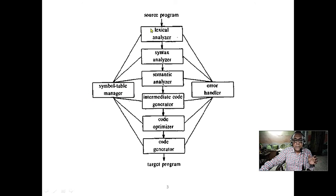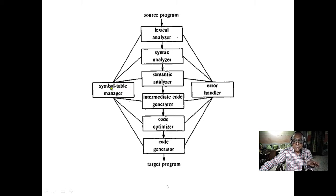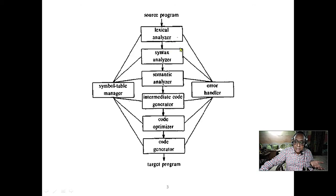In the symbol table, all the tokens — integer variables, floating point variables — will be stored here. The scope of variables, whether local or static, and all function names and their scope — everything is stored here. The lexical analyzer job is to fill up the symbol table. The symbol table is the heart of your compiler or interpreter, and it will be thoroughly checked by the syntax analyzer.